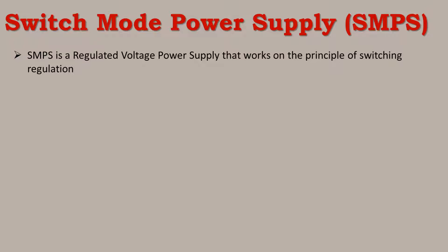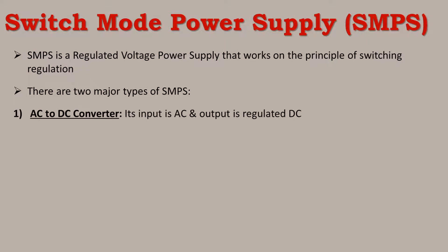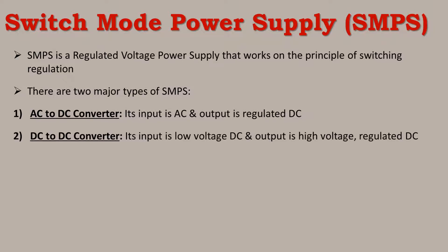In SMPS, you can consider two major types. One is an AC to DC converter — the input is AC and the output is regulated DC. The next type is a DC to DC converter — the input is low voltage DC and the output is high voltage regulated DC.